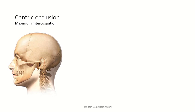Before going into the detail of the topic, you should know what centric occlusion is. Centric occlusion is the maximum intercuspation of upper and lower teeth — when you bite, when you close your jaw, when you occlude your upper and lower teeth and achieve maximum intercuspation. This position of the jaw is known as centric occlusion.